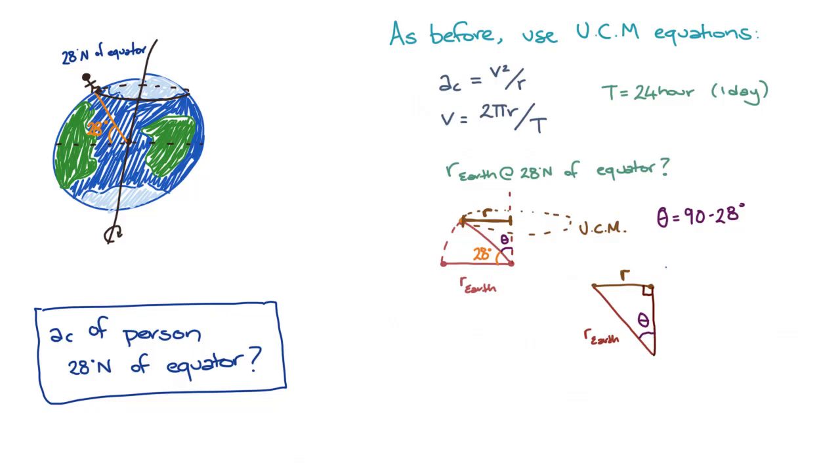So now that we have an angle, the radius of the Earth, and a right angle triangle, we can use trigonometry to work out r. From SOHCAHTOA, we know that sin of theta will equal r, the radius of the uniform circular motion path of a person standing at 28 degrees north of the equator, divided by r Earth.